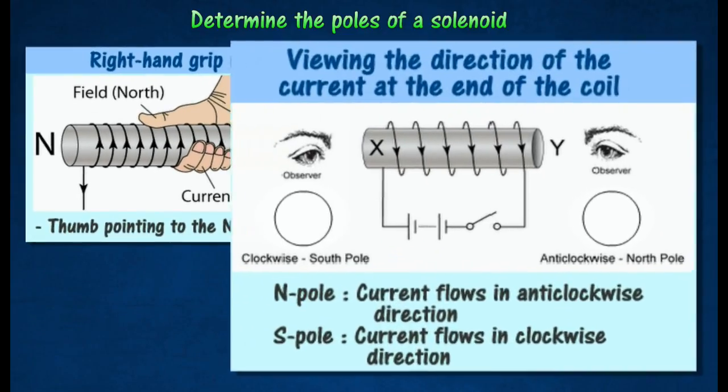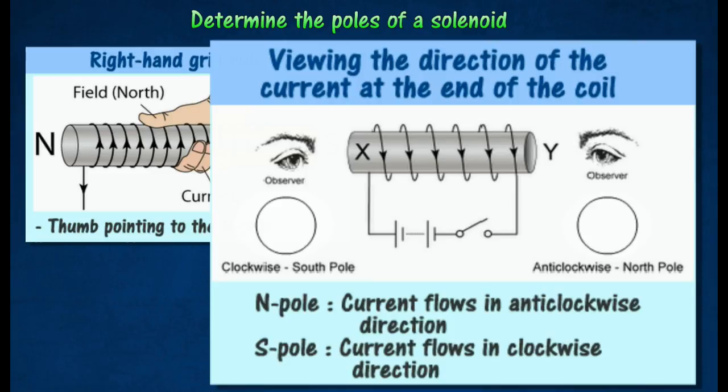The polarity of the solenoid can also be worked out by viewing the direction of the current at the end of the coil.